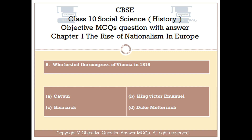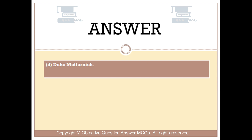Question number 6. Who hosted the Congress of Vienna in 1815? Option A: Cavour. Option B: King Victor Emmanuel. Option C: Bismarck. Option D: Duke Metternich. The right answer is Option D — Duke Metternich.